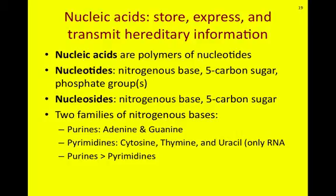Purines by structure are larger than pyrimidines. In fact, purines have two rings fused together, whereas pyrimidines only have one ring of carbon-based structure.